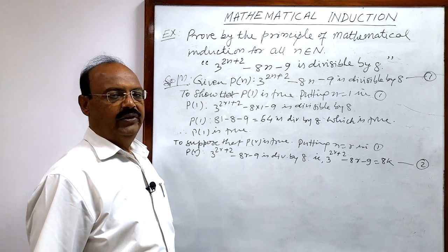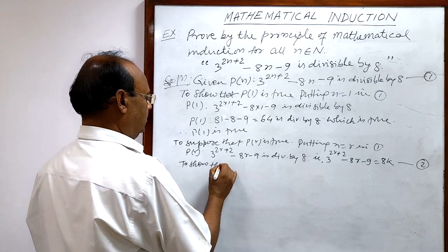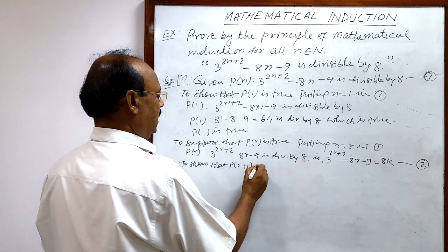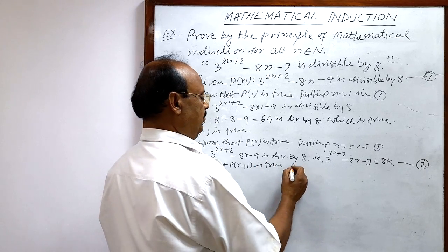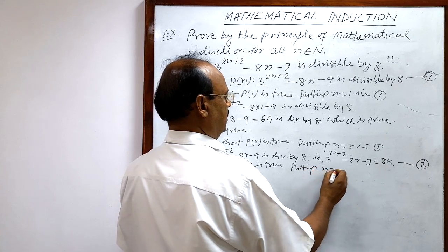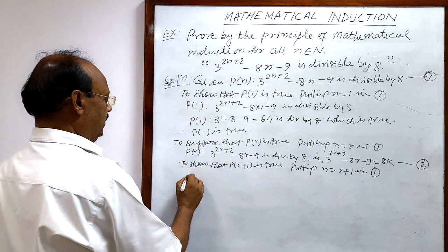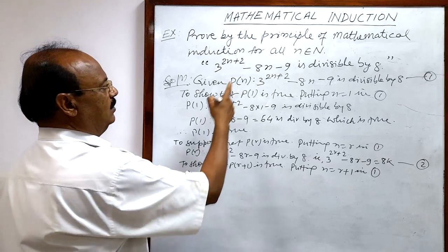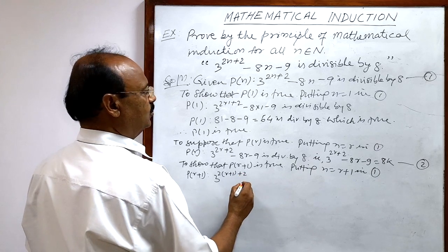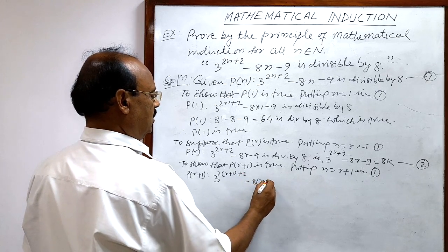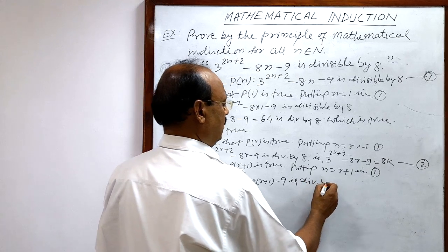The third step is to show that P(R+1) is true. We put n equal to R+1 in the statement to get P(R+1): 3 to the power 2 into (R+1) plus 2 minus 8 into (R+1) minus 9 is divisible by 8. We have to prove this.